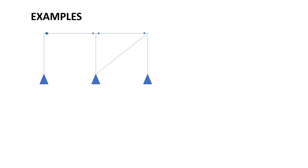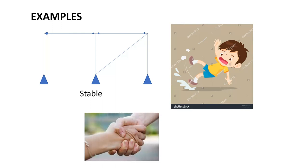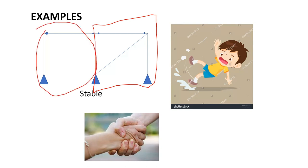One more example of stability: can you identify whether this frame is stable? Yes — it is a stable frame. Think of it like a kid who is falling: to prevent falling, the kid either grabs a fixed support or holds the hand of someone standing nearby. Similarly, since this adjacent frame is stable, and this unstable frame is connected to it, the whole frame becomes stable. If you liked this content, please like, share, and subscribe to my channel.